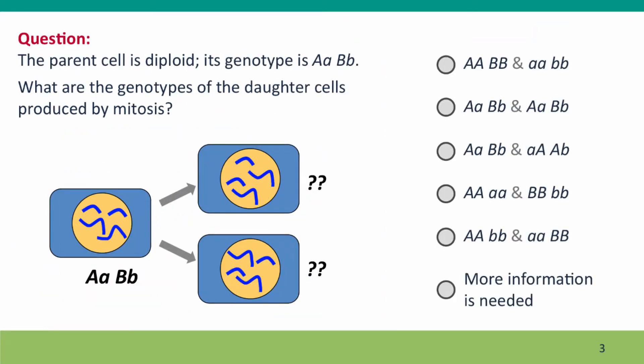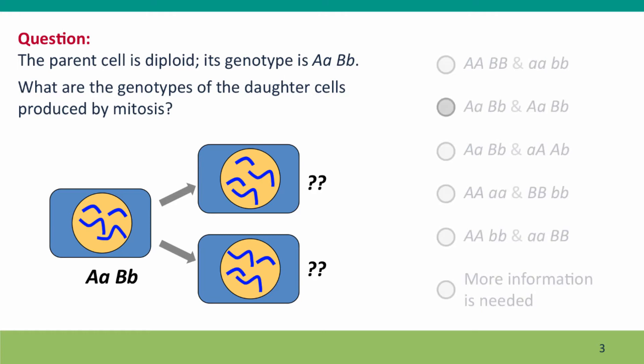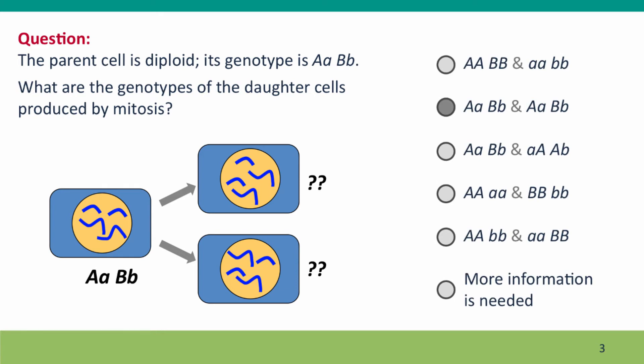So first we'll start with a question. Here's a cell undergoing mitosis. You're given the genotype of the parent cell. What are the genotypes of the daughter cells? If you remember from last time, the genotypes of the daughter cells will be the same as the genotype of the parent cells — not some other fancier combination that you might vaguely remember from high school genetics.